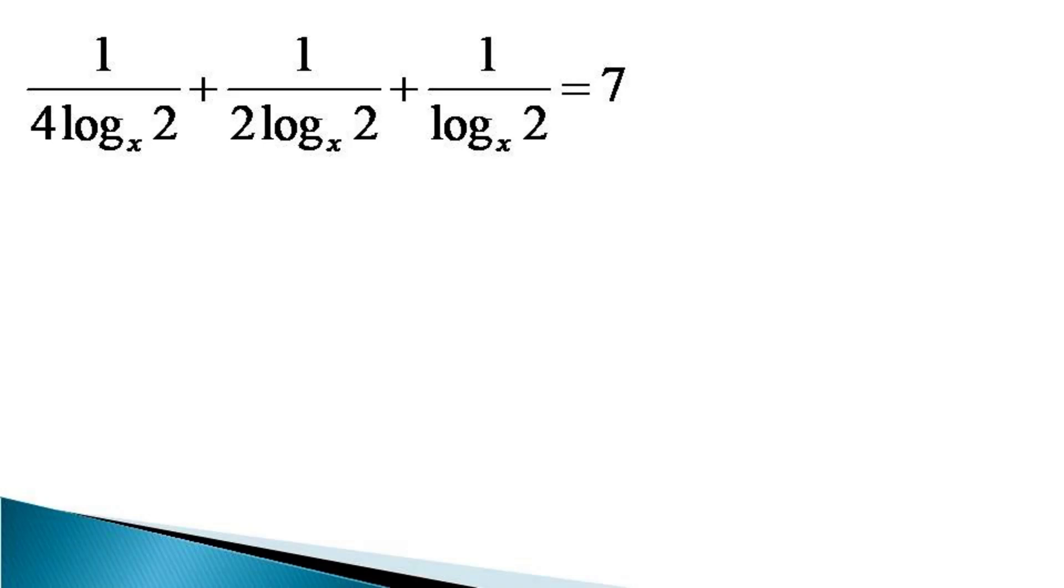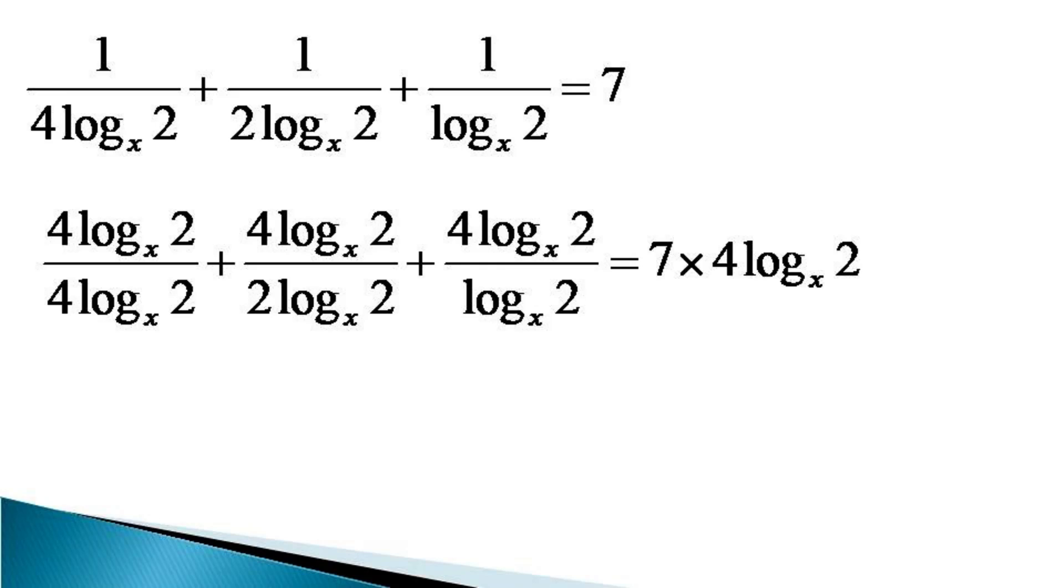To remove the fractions from this equation, we multiply the whole equation by 4 log 2 to the base x. This multiplication results in another equivalent equation as 1 plus 2 plus 4 is equal to 7 times 4 log 2 to the base x. The left hand side becomes 7 and it is equal to 7 times 4 log 2 to the base x.